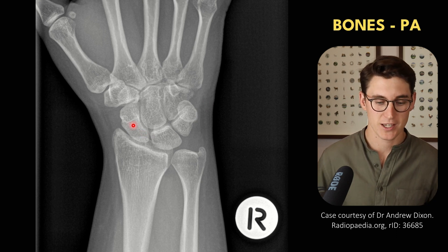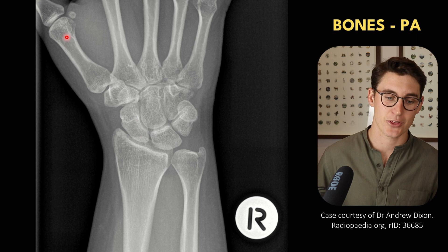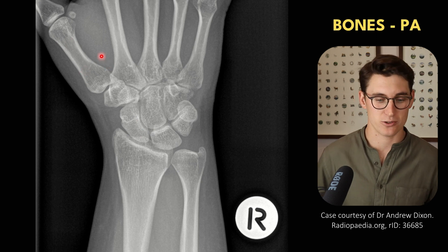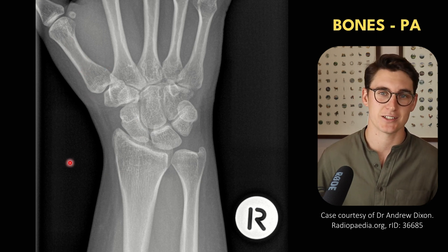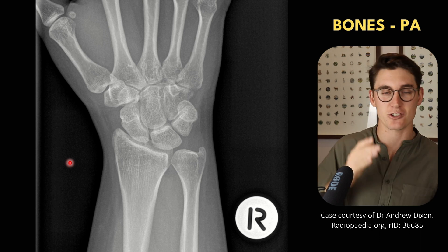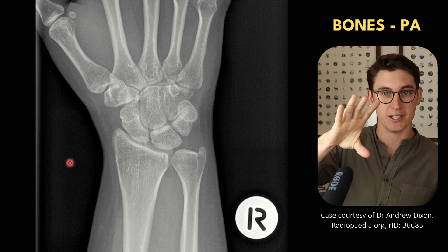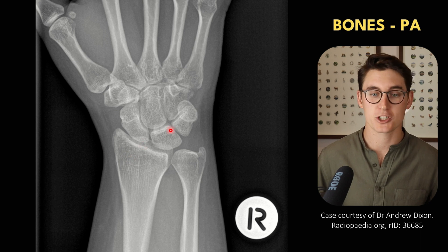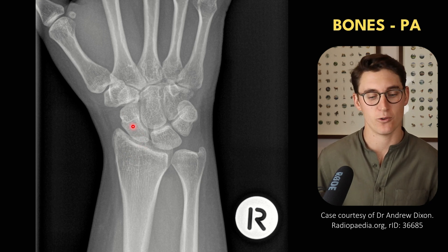Let's start by naming the proximal row, starting laterally. We can see our thumb in the anatomic position is lateral. We know that our thumb is on the same side as the radius — an easy way to remember this is that your thumb can do a radial movement, so it's on the same side as the radius. Our proximal row lateral bone is our scaphoid bone.